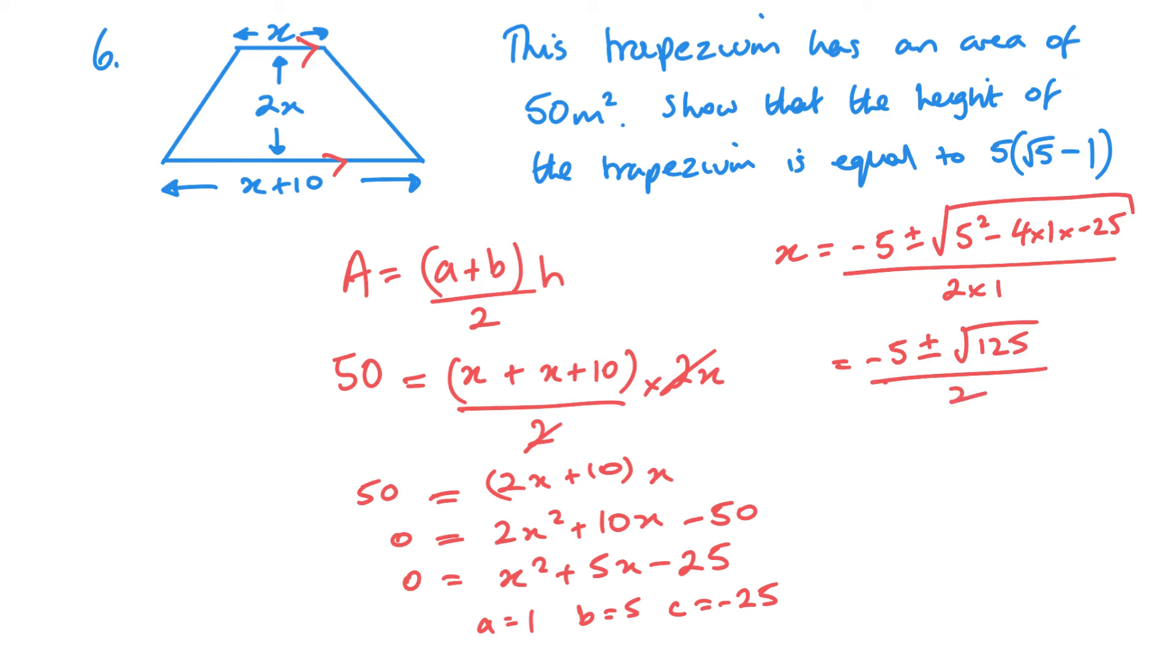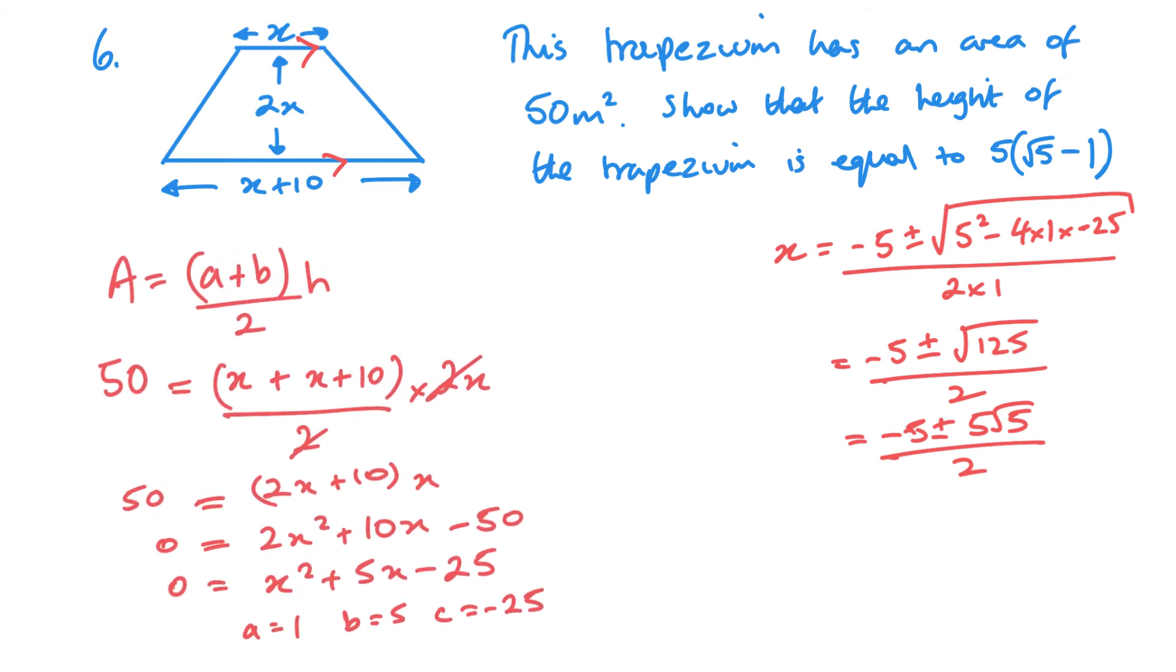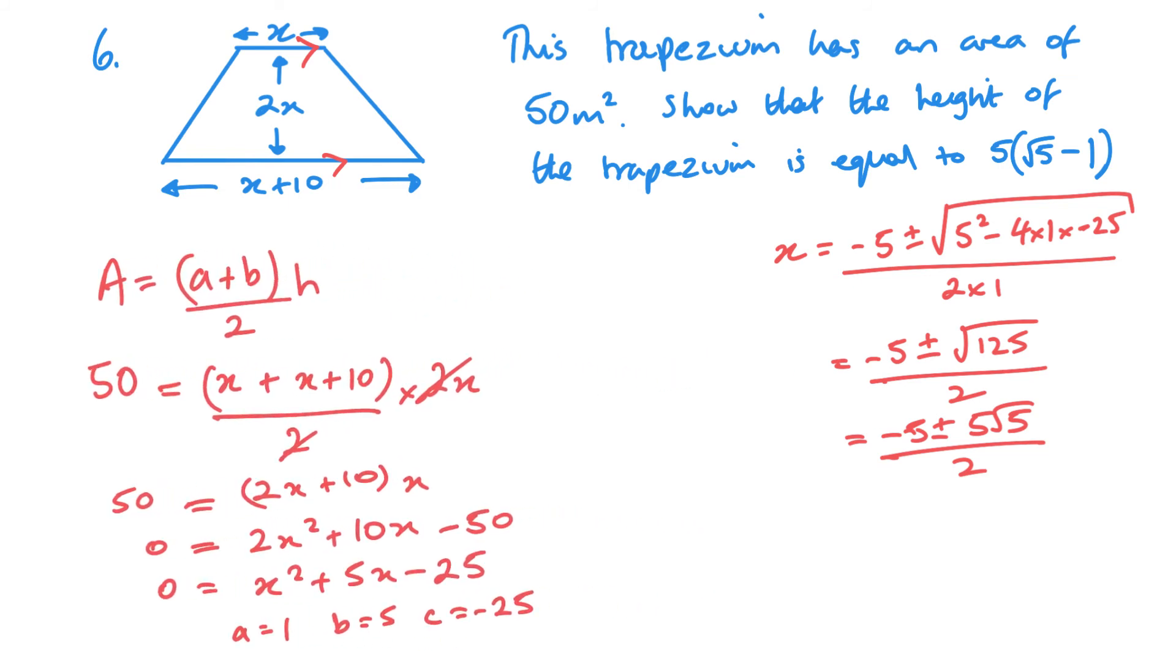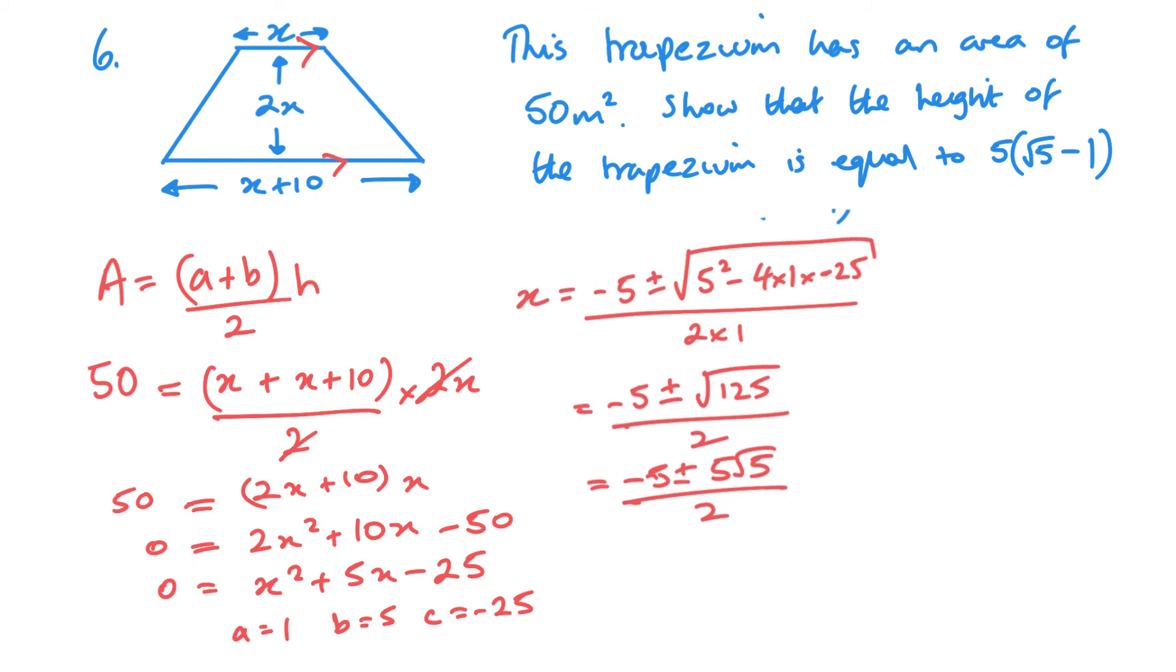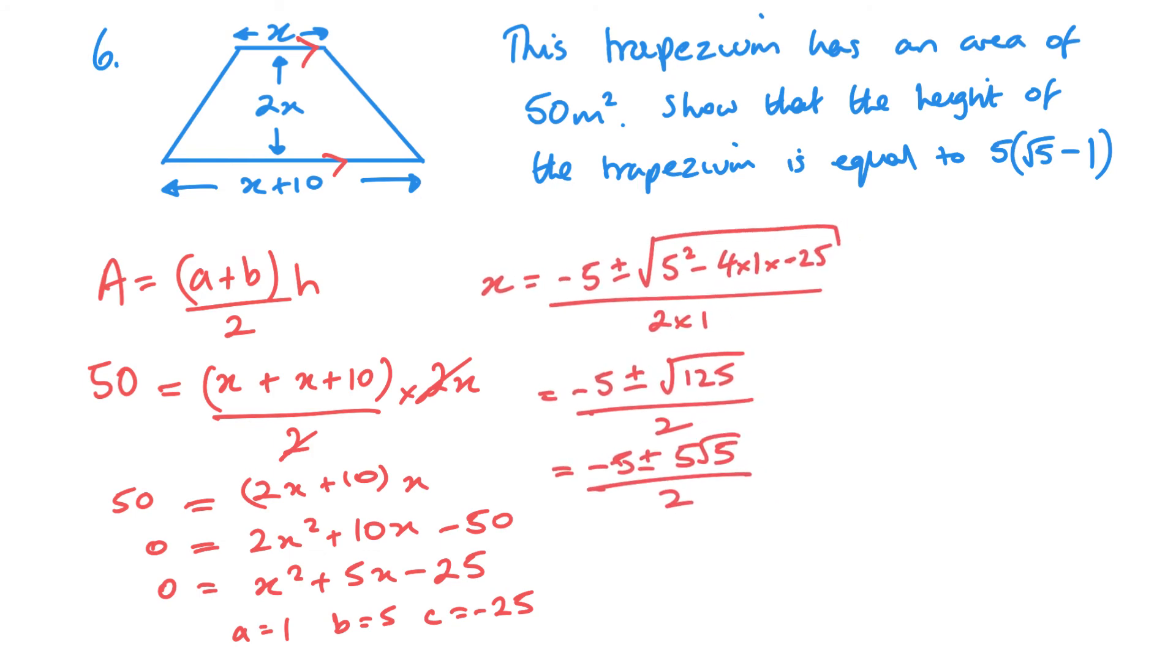So, we've got minus 5 plus or minus 125 over 2. Now, square root of 125 can simplify to 5 root 5. So, we've got minus 5 plus or minus 5 square root 5 over 2. Now, my height is positive, okay? Height can only be positive. Let's just give myself a little bit more room there.